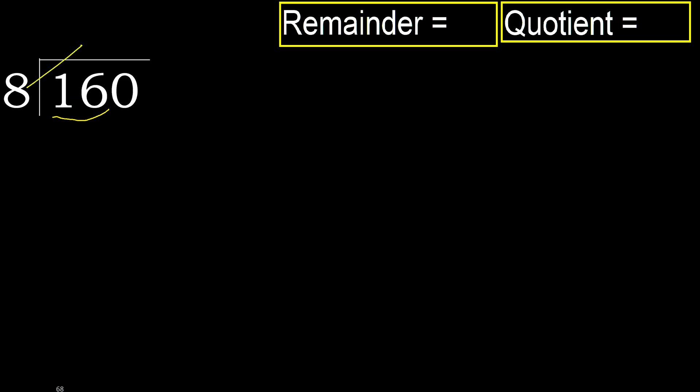8 — multiply by which number is nearest to 16 but not greater. 8 multiplied by 3 is 24; 24 is greater. Multiply by 2: 16, which is not greater.